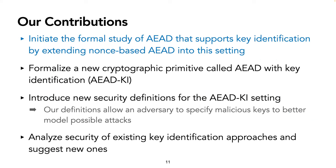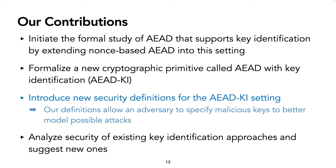We therefore initiate the formal study of AEAD that supports key identification, by extending non-spaced AEAD into this setting. In this talk, we'll go over our formalization of a new cryptographic primitive called AEAD with key identification, or AEAD-KI. Decryption now takes in a vector of secret keys and a ciphertext, and must both identify the correct secret key and decrypt the ciphertext. We'll next introduce new security definitions for the AEAD-KI setting. Notably, our definitions allow an adversary to specify malicious keys to better model possible attacks. And lastly, we'll analyze the security of existing key identification approaches, as well as suggest new ones.